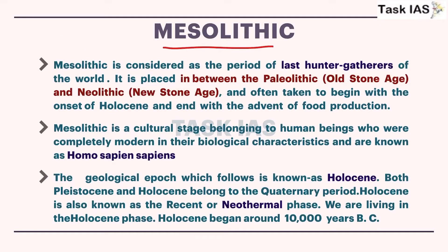Mesolithic is the period between Paleolithic and Neolithic cultures. In Mesolithic, there are more evolutionary, more advanced features as compared to Paleolithic, but those features are less developed as compared to Neolithic. Mesolithic people are called the last hunter-gatherers of the world.